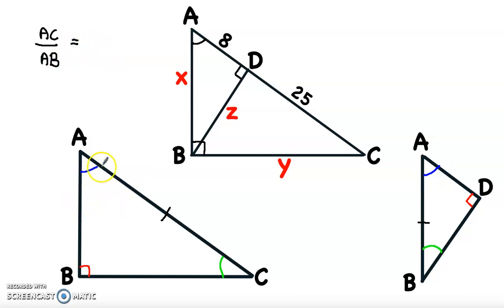the side between the blue angle and the 90 degree is AB, so over AD. Now AC is equal to 8 plus 25, so 33, and AB equal to X, equal X over AD 8.